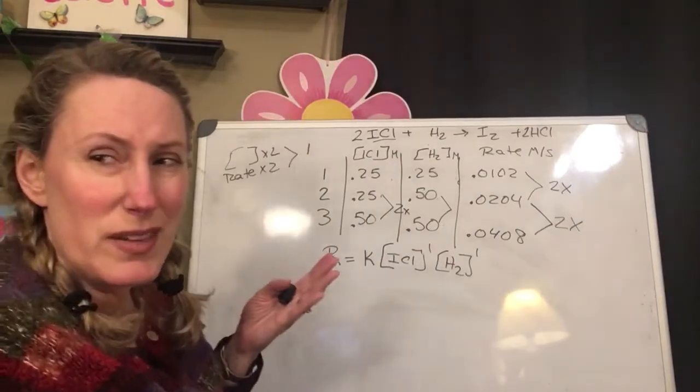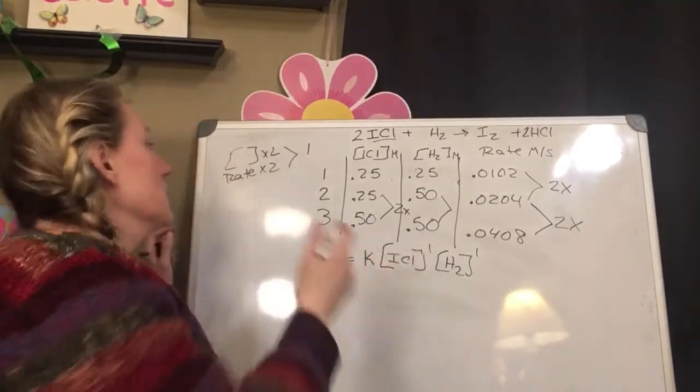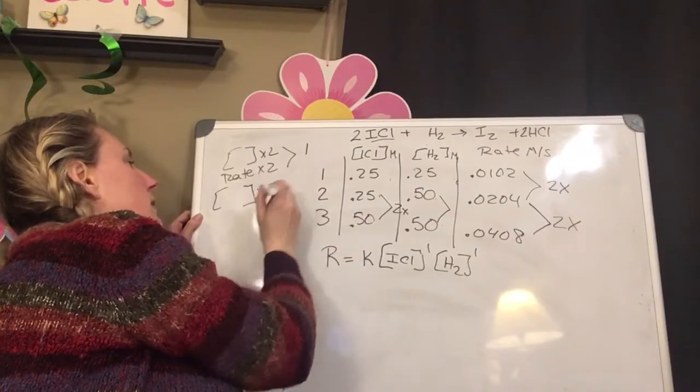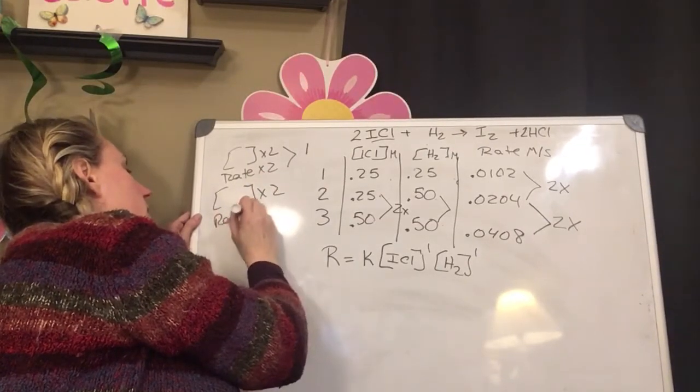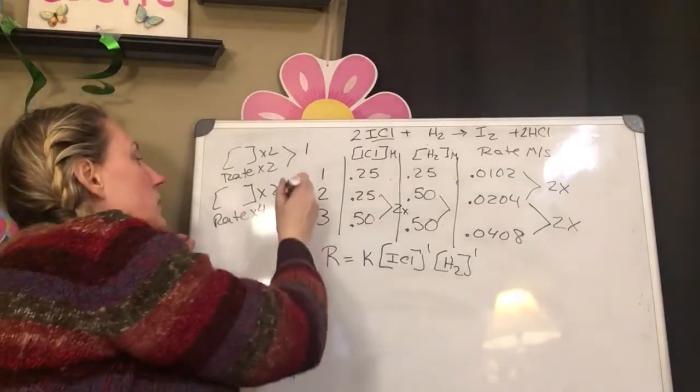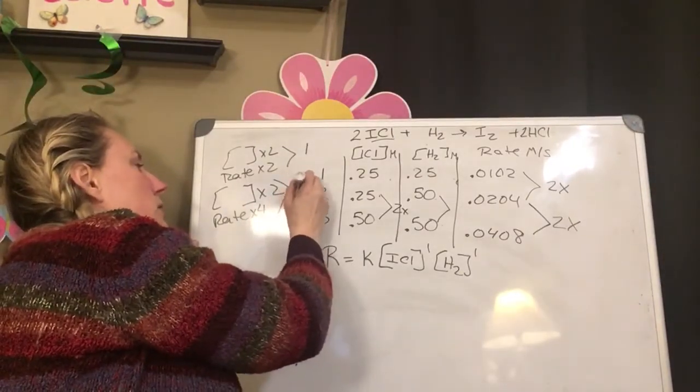So does it always happen that way? No. Sometimes my concentration will double and my rate will go four times. So then my exponent is going to be a 2.